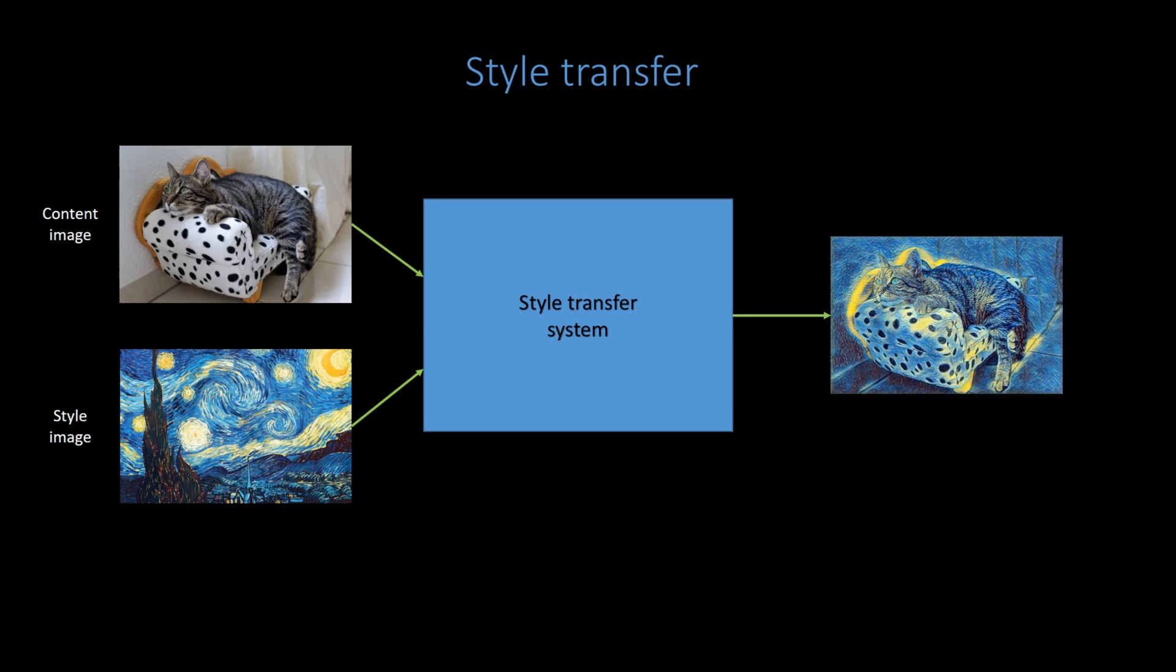The general idea is to take two images. A content image, and a style image. And produce a new image that reflects the content of the first, but the artistic style of the other.